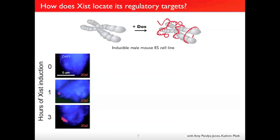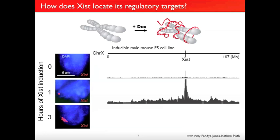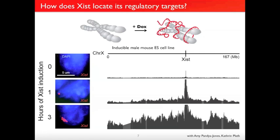By FISH, before you activate XIST, you don't see it. After one hour of activation, it appears as a spot. After three hours of activation, it begins to spread out across the chromosome and form its distinctive compartment. When we look at this at high resolution with RAP, there's very little enrichment across the X chromosome at zero hours. At one hour, it appears as a large peak around the XIST locus itself. By three hours, it's obvious that it's spreading across the chromosome. Now with this data, we can answer where XIST goes first.